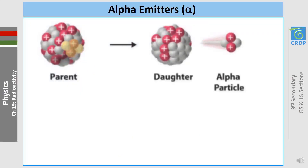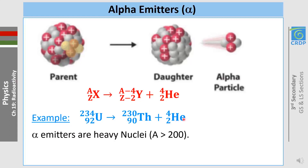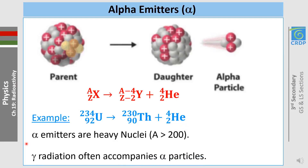Alpha emitters are elements that decay emitting alpha particles. This is the general equation of an element X decaying into another element Y and emitting alpha. An example is uranium disintegrating into thorium and yielding alpha — we say uranium is an alpha emitter. Alpha emitters usually possess a mass number of more than 200; they should be heavy. We often see gamma radiation accompanying alpha particles.